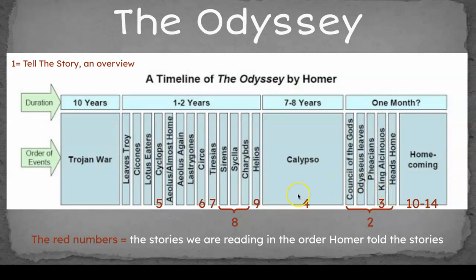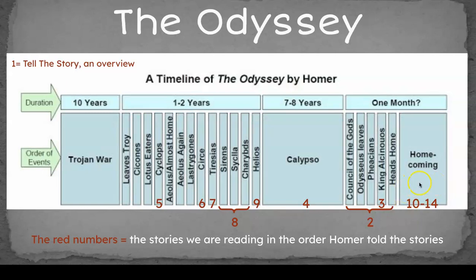First, he tells how he just came from the island of Calypso, where he was kept for seven or eight years, and that when she finally released him he came directly to the court. Then he goes all the way back — we read story five, the Cyclops; story six, Circe; story seven, going to the land of the dead and meeting Tiresias; story eight, the Sirens, Scylla and Charybdis; story nine, the cattle of the Sun God, where all his men die. Then we jump to the end: stories 10 through 14 cover his homecoming, all happening in that last month.